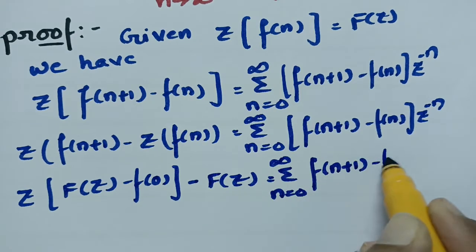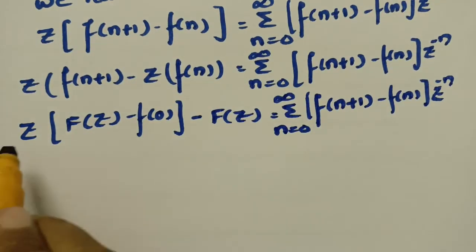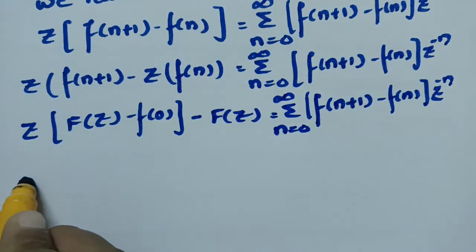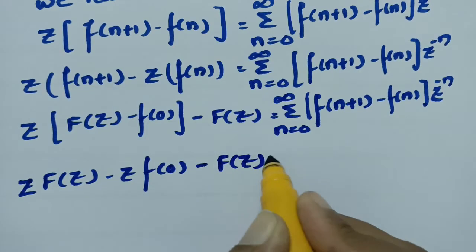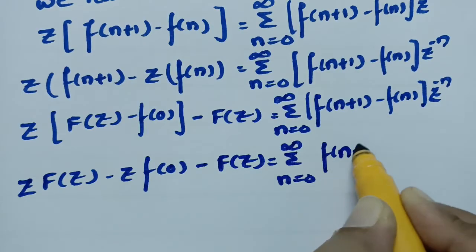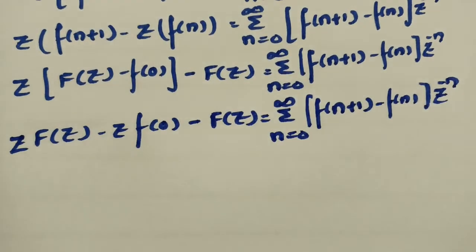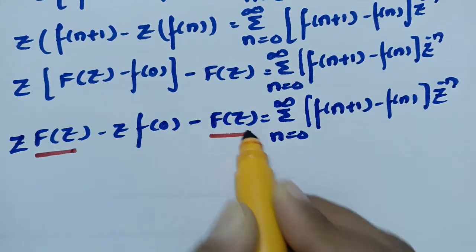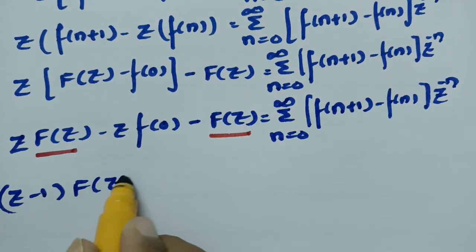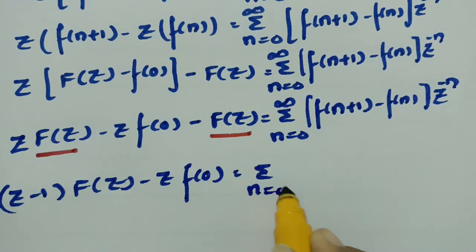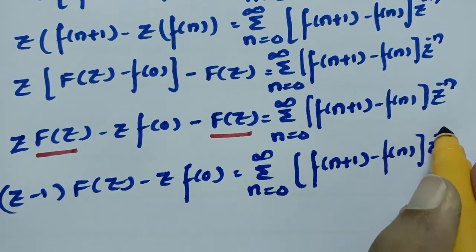Taking F(z) common, we get Z into capital F(z) minus Z into f(0) minus capital F(z), which again equals sigma from n equals 0 to infinity of [f(n+1) minus f(n)] into z to the power minus n. Taking F(z) common gives us (z minus 1) times capital F(z) minus z into f(0), equal to the same summation.